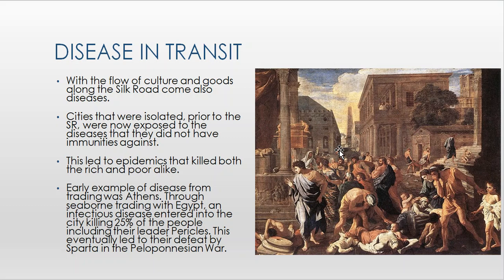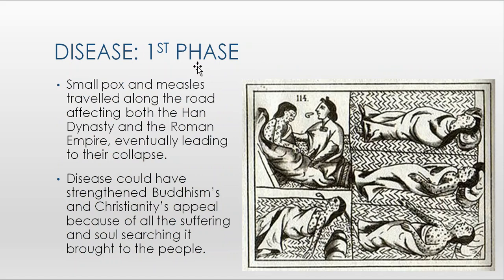This led to epidemics that killed both the rich and poor alike. An early example is Athens, where through seaborne trading with Egypt, an infectious disease entered the city, killing 25 percent of the population including their leader Pericles, and eventually leading to their defeat by Sparta in the Peloponnesian War. To be clear, the Silk Road was not yet active at this point — this is used as an illustrative example of how trade spreads disease.